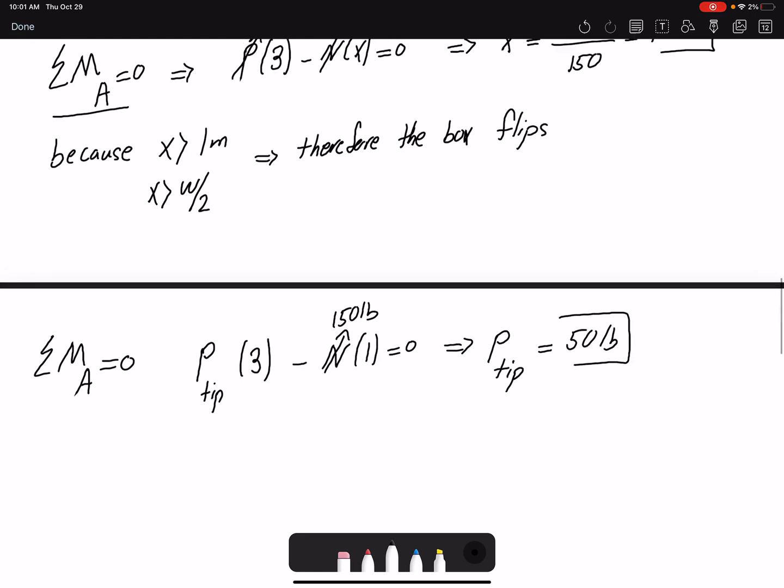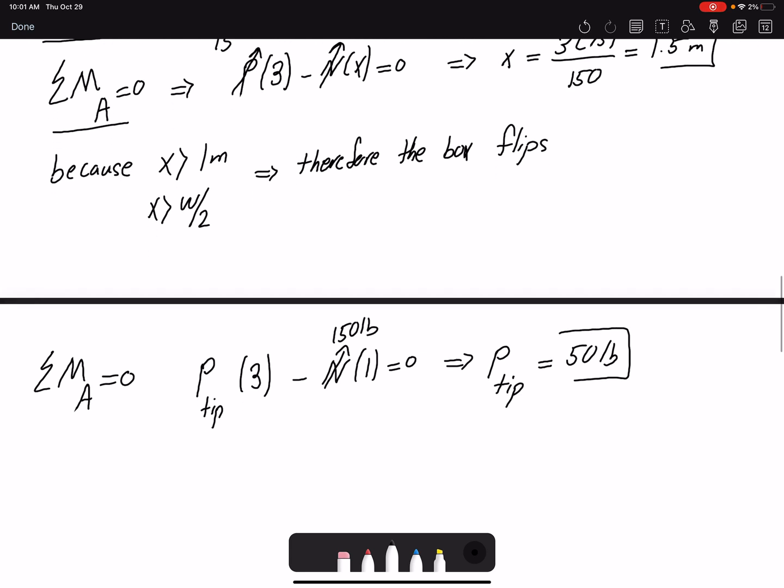So the force that it takes to move the box was 75. P to slide the box was 75 pound and to tip the box was 50. You can see that we reached this one first, so the box will tip with 50 pound. So the answer to the question that says how much force it takes to move the box, that would be 50 pound.